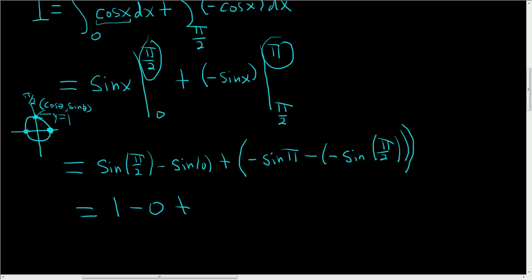Again, we're over here. So that's 0. So plus, I'll use the parentheses, negative 0 minus negative, and then the sine of pi over 2. Well, we said that's 1. Parentheses, parentheses.